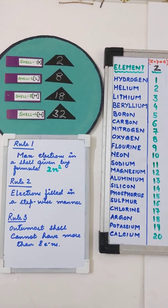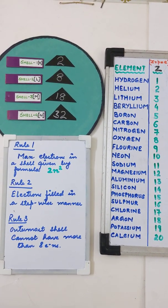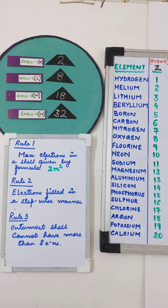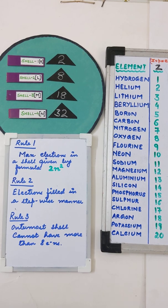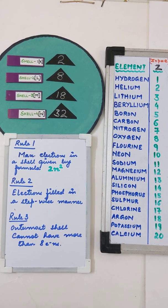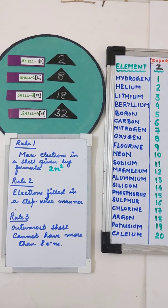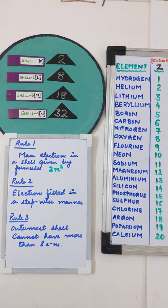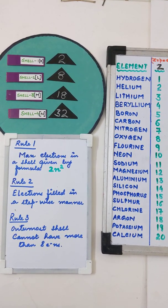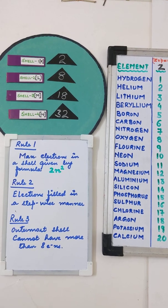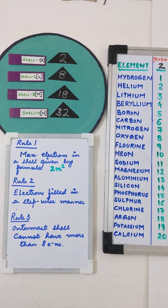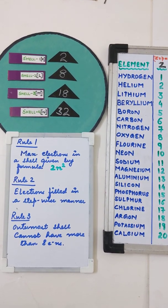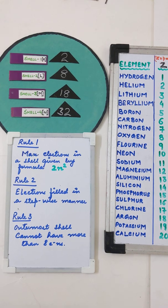Let us quickly write the electronic configuration of all the 20 elements. Before we do that, let's do a quick retake on the three rules. The first rule for writing the electronic configuration is that the maximum electrons in a shell is given by the formula 2n², where n stands for the shell number.